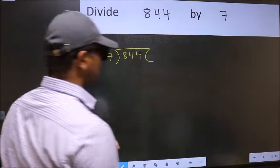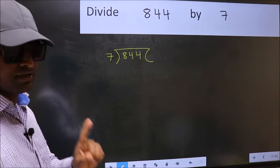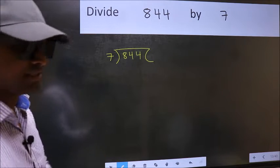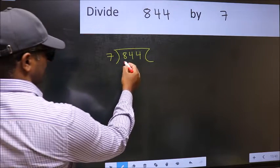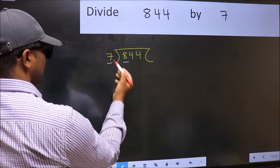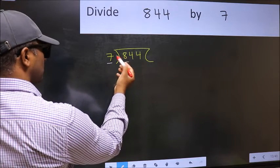This is your step one. Next, here we have 8 and here 7. A number close to 8 in seven's table is seven ones, seven.